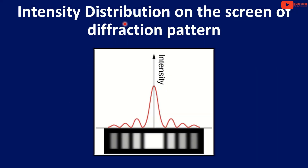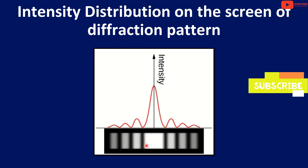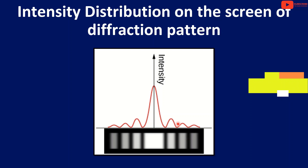Now, the intensity distribution on the screen of the diffraction pattern. In the center we have the principal maximum with the highest intensity. On either side we have alternating dark and bright bands of decreasing intensity.